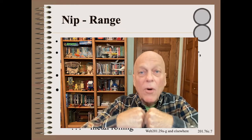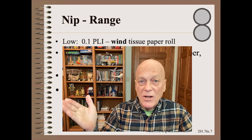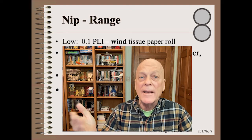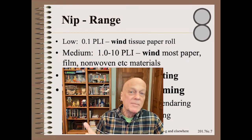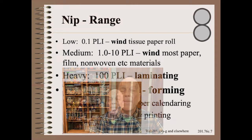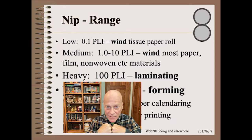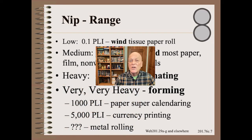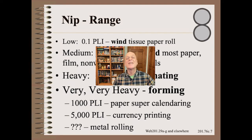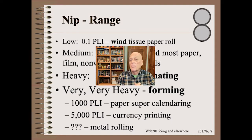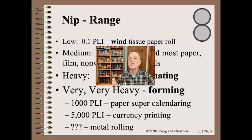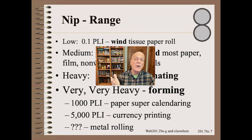Nips vary even more in the web world. Again, tissue is at the low end, perhaps 0.1 pounds per inch for winding. Most webs are wound with nips on the order of 1 to 10 pounds per inch. Laminating is 10 times heavier still. Heavy forming nips abound in certain applications such as paper and rubber. Ordinary dollar bills are printed at loads exceeding 2 tons per inch of width, so much so that the print cylinder is engraved as a parallelogram to allow for web expansion under such crushing loads. I'm not sure how heavy metal rolling nips are, but they are no doubt quite heavy.